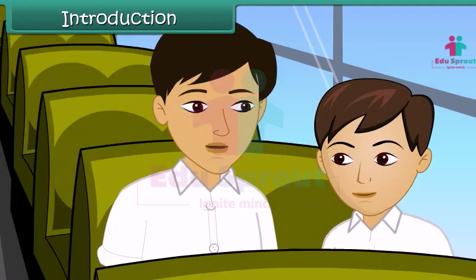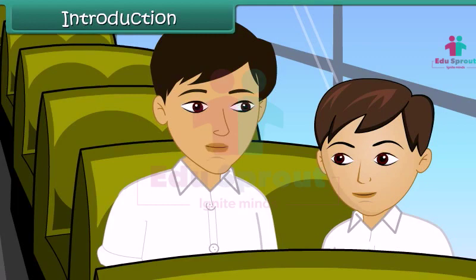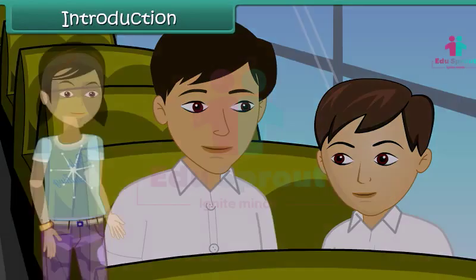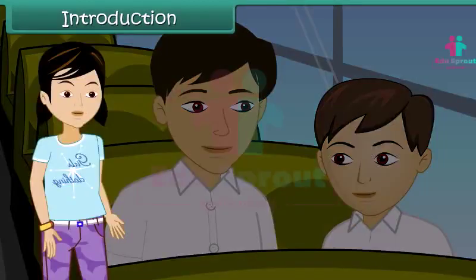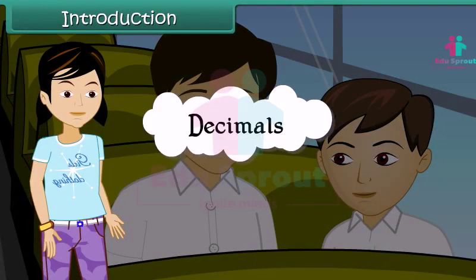Well, 3.2 lies between 3 and 4. And we call the number after the point a decimal number. Basically, it is a part of a whole number. Children, in this lesson we will learn about decimals. Come along to know.